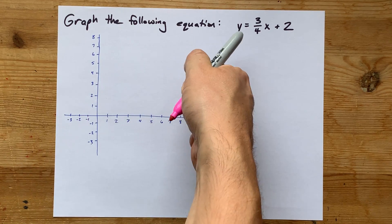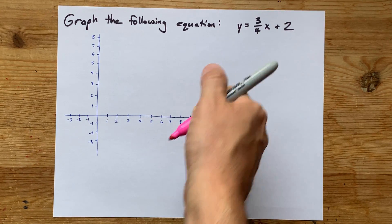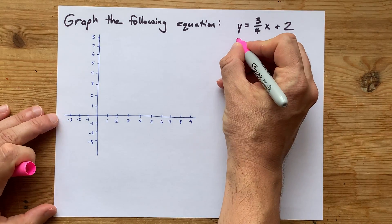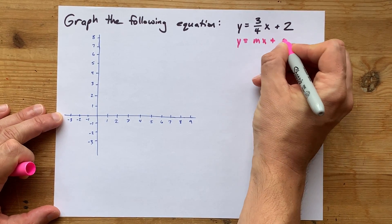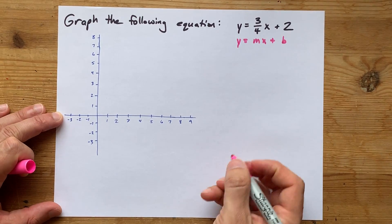Let's graph the equation y equals three-quarters of x plus 2. This is already in what we call y equals mx plus b form, or slope-intercept form.